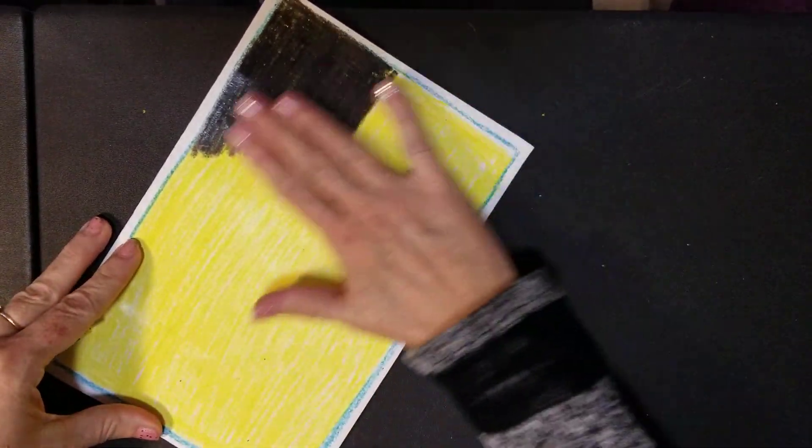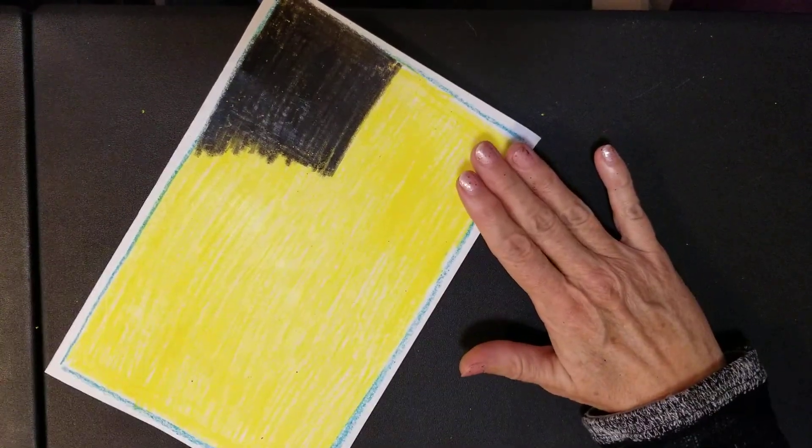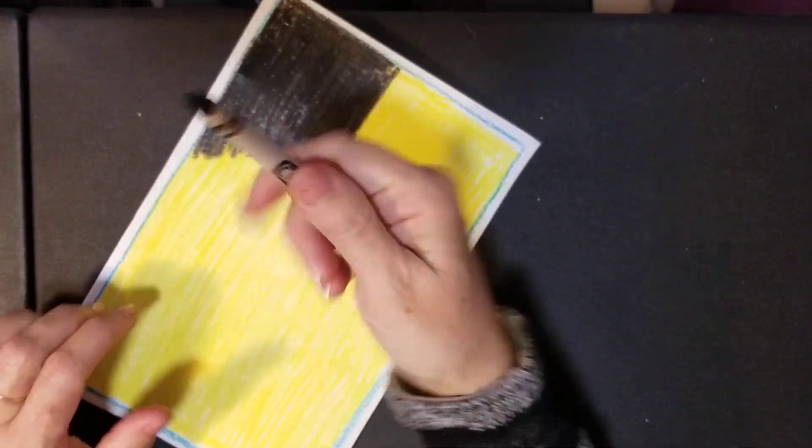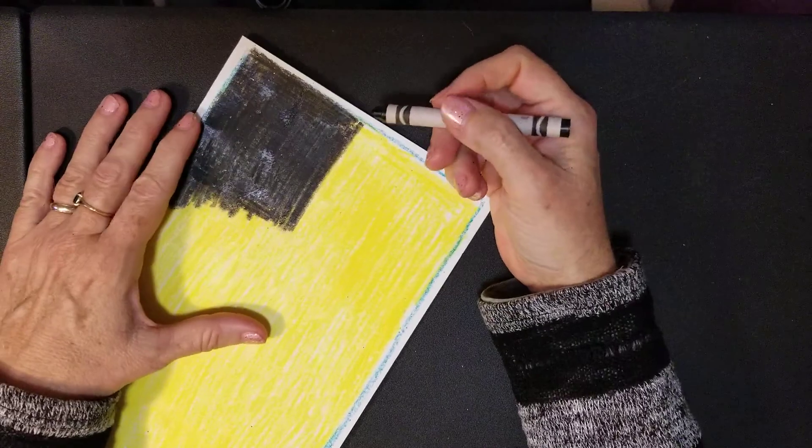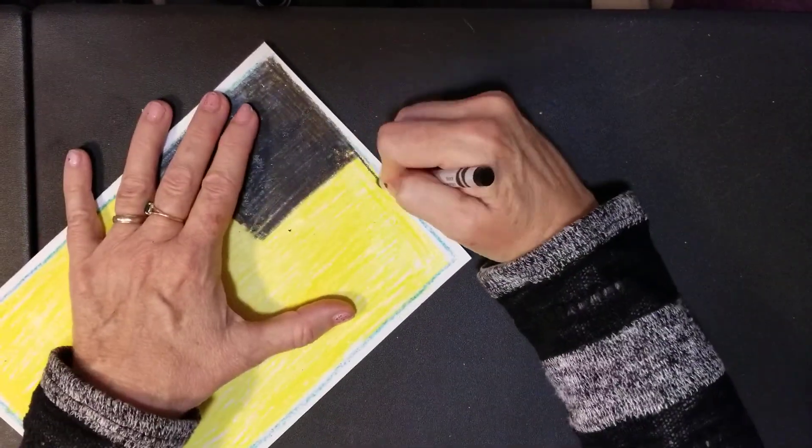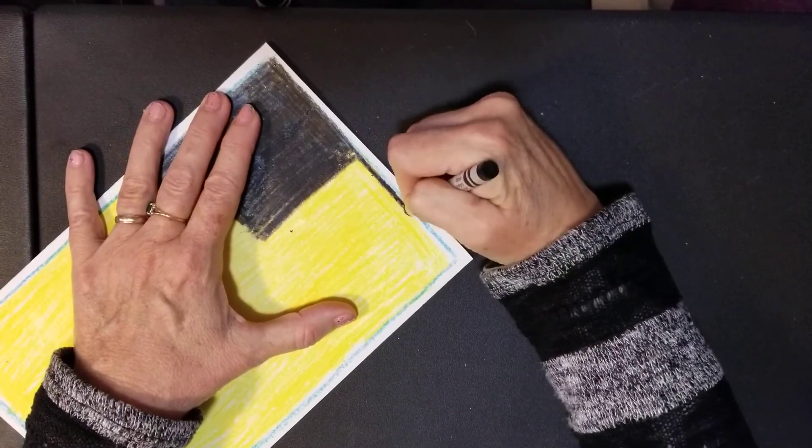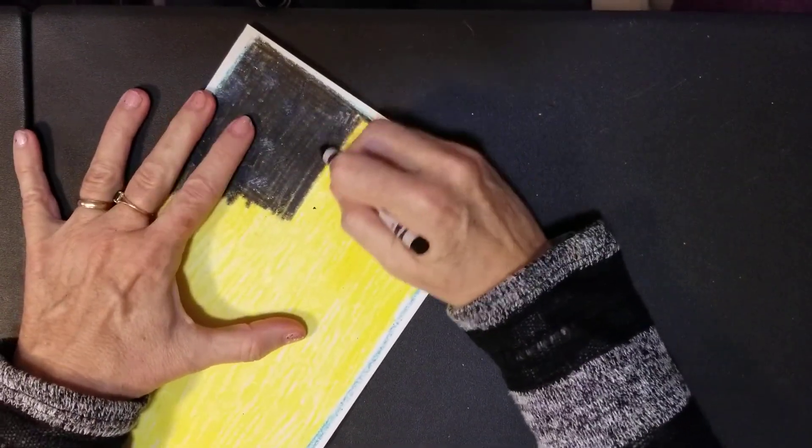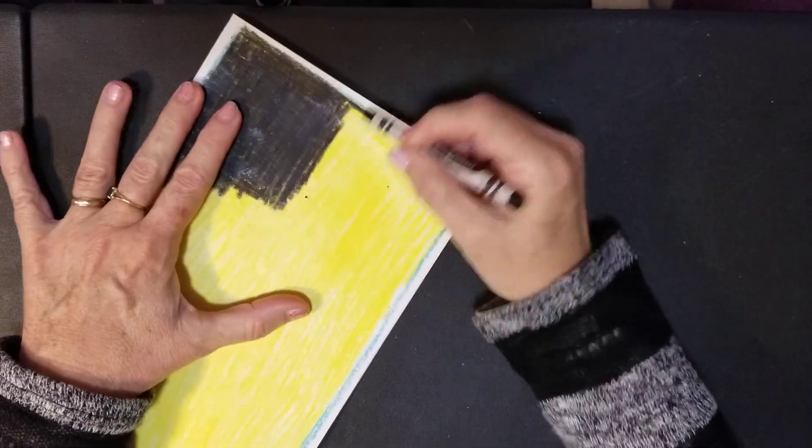Once I have that layer of yellow over everything, I'm going to take my black crayon and do a layer of really dark, waxy black over top. I've already started and won't take time to do the whole thing, but I'll do this little bit so you can get the idea.